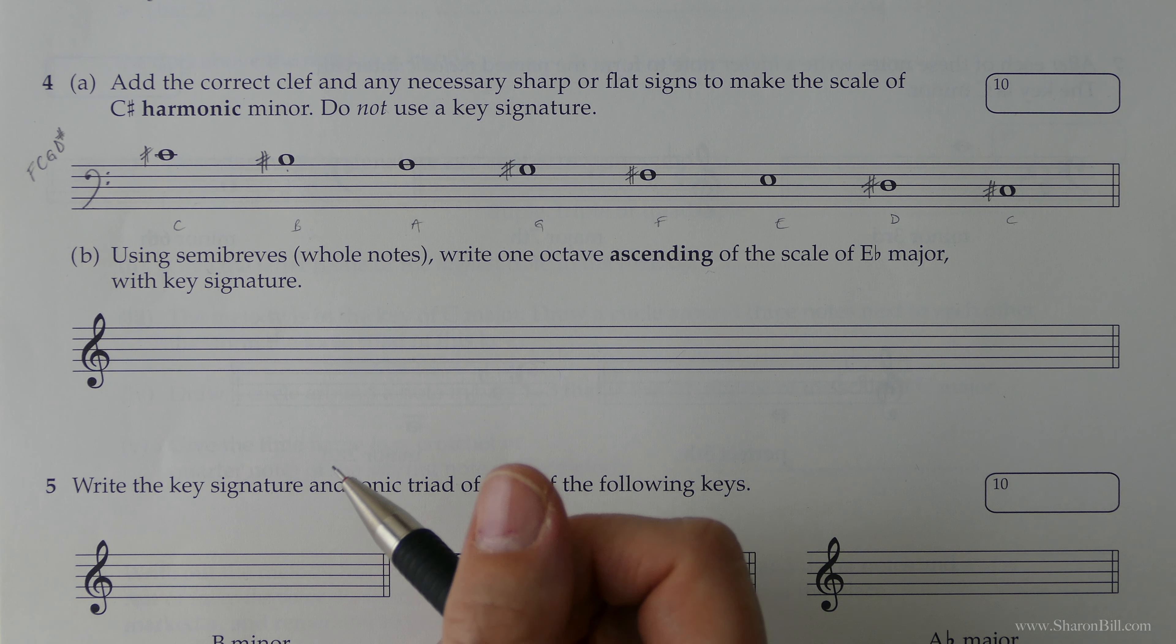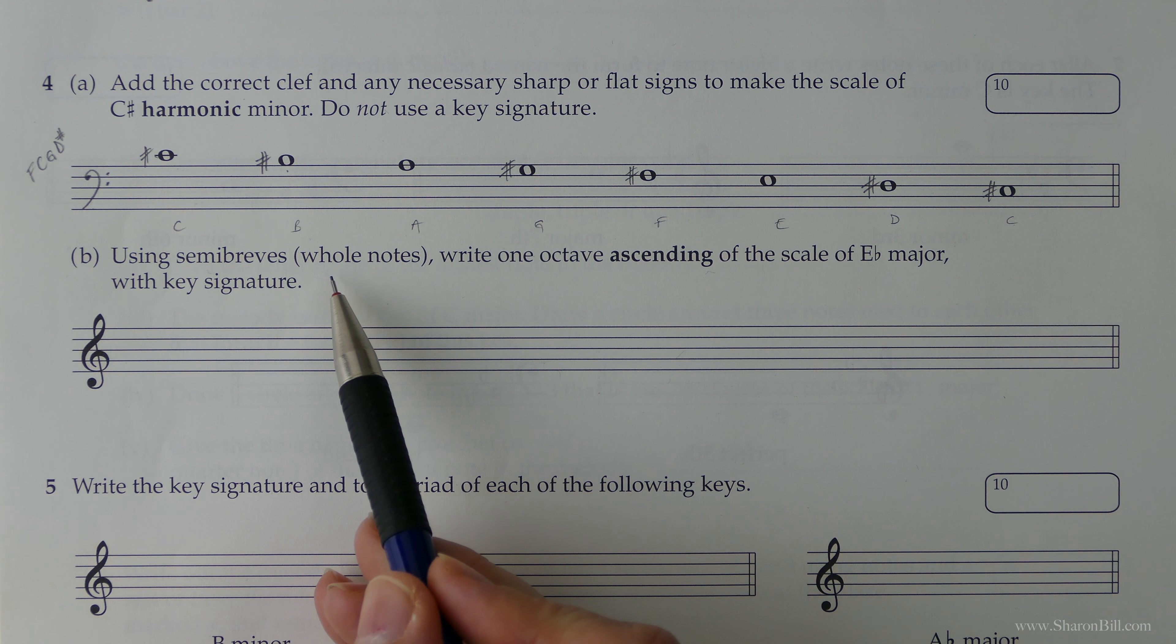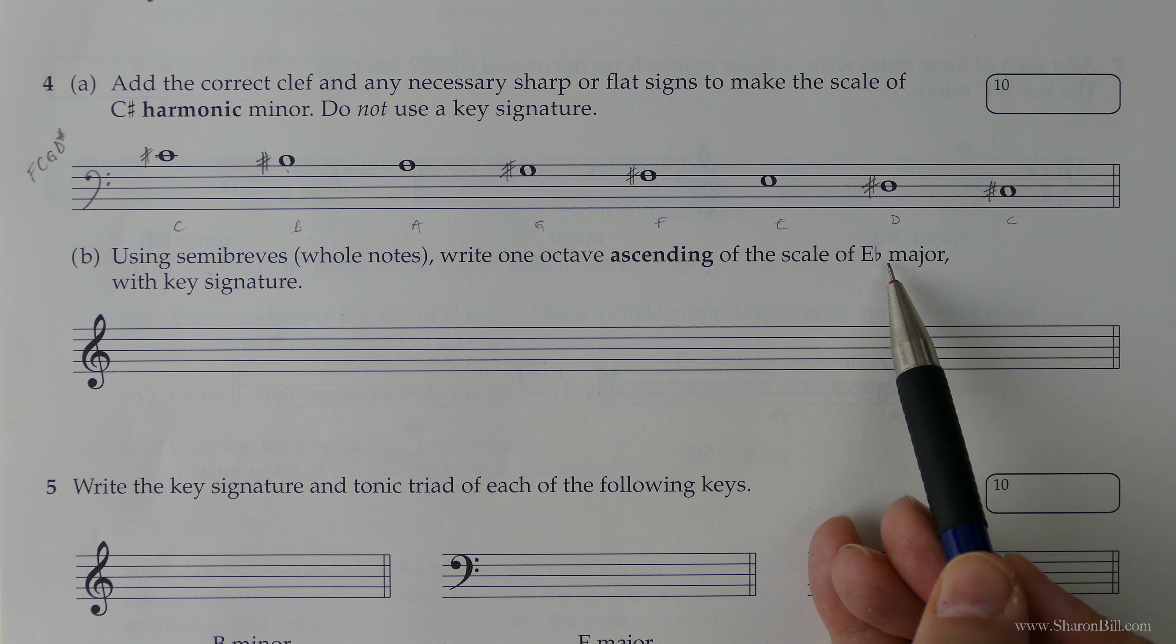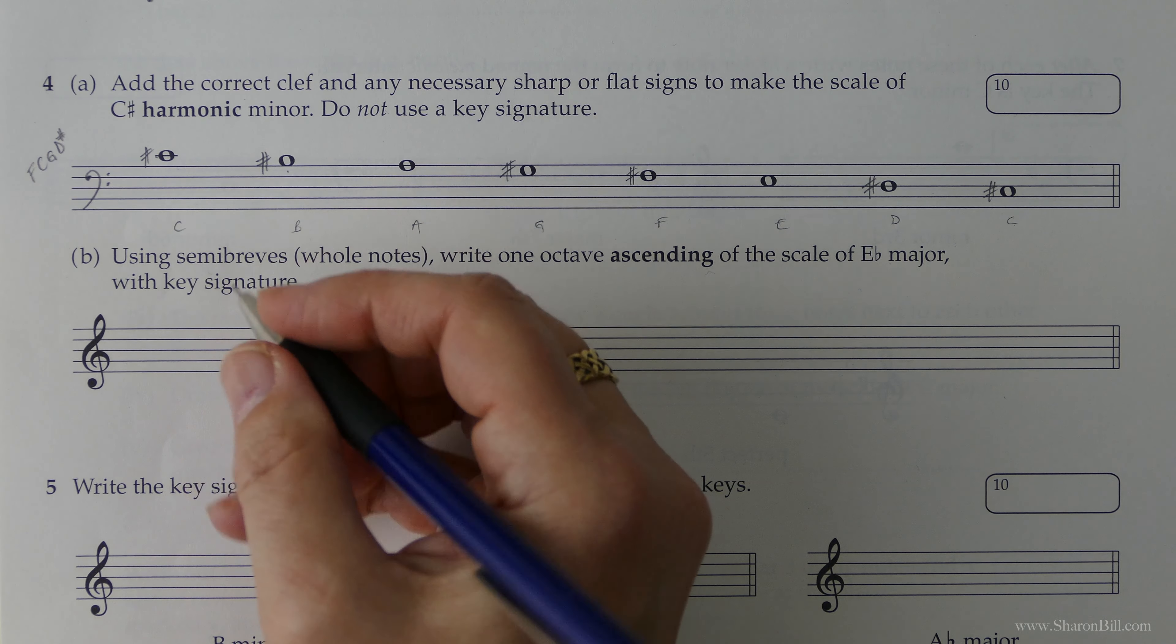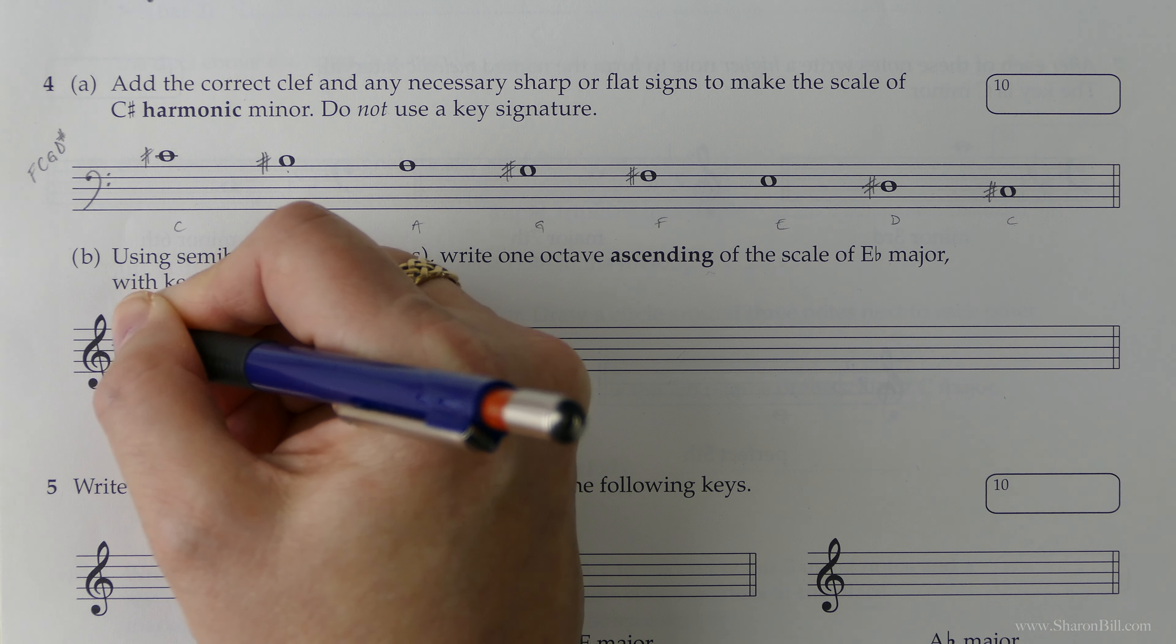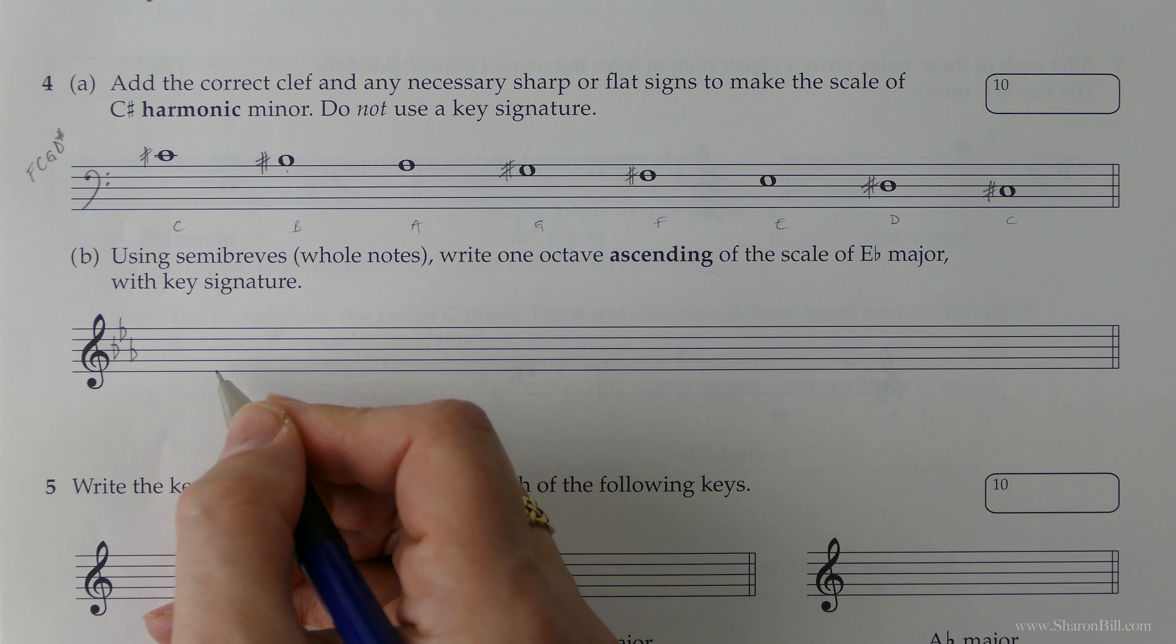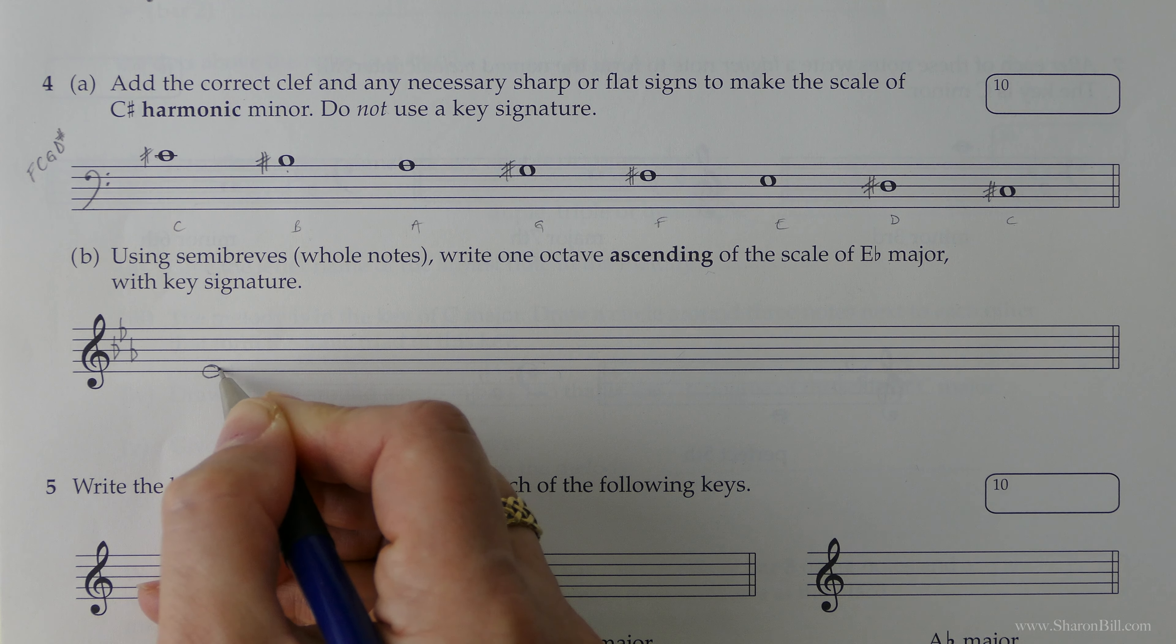So the next one we're asked to do, using semi-breves or whole notes, this means we don't have to bother with stems. We need to write one octave ascending, so we're going up of the scale of E-flat major. We need to do the key signature. So let's do that straight away. E-flat major has a key signature of B-flats, E-flats and A-flats, positioning those carefully in the treble clef place. And so we're beginning on E, of course it's E-flat, but now the key signature does that job for you.